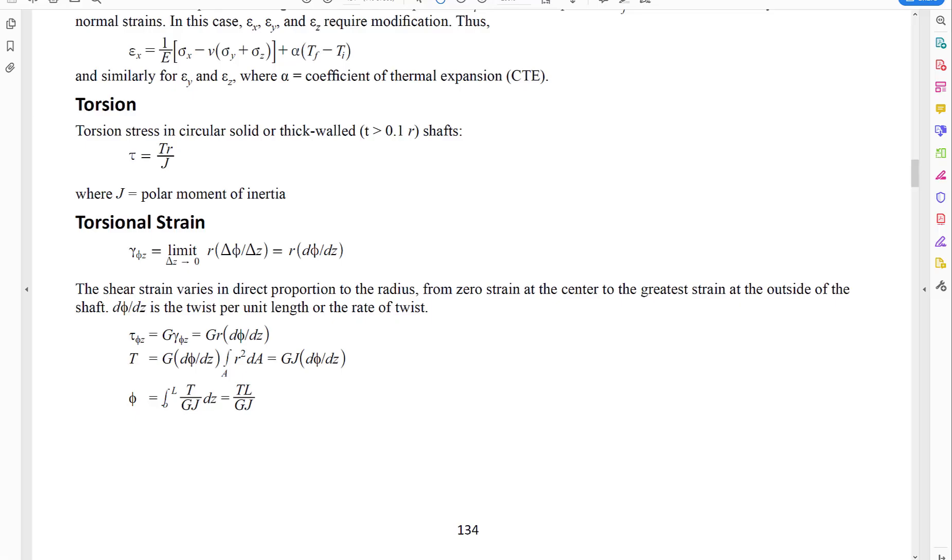And if we look at the FE Reference Handbook, we get this equation here where we have tau, or the torsional shear stress, equals TR over J. And this is where you need to know what these values mean. Well, T is going to be the torque, R is the radius, and J is the polar moment of inertia.